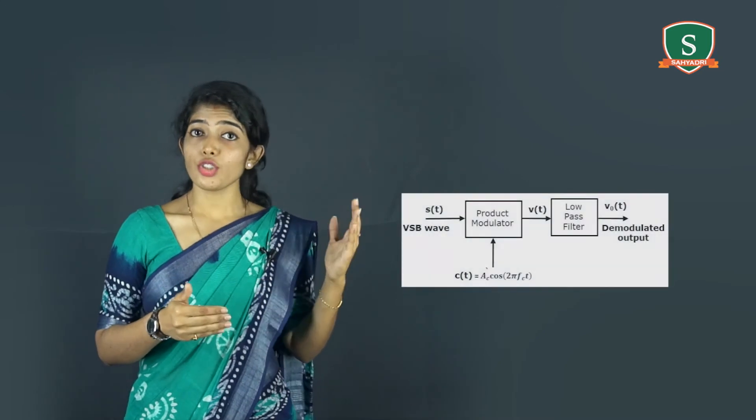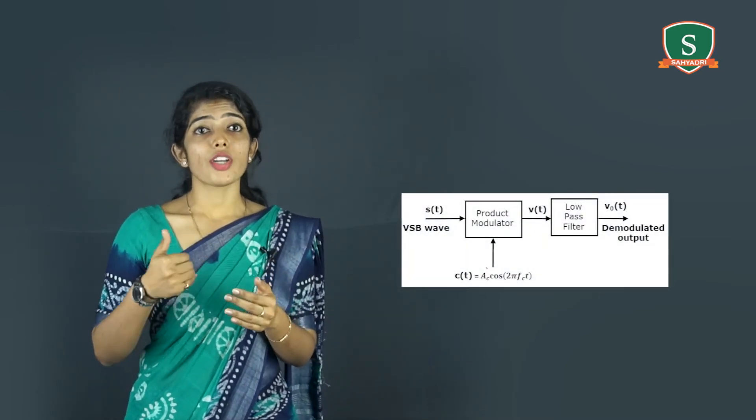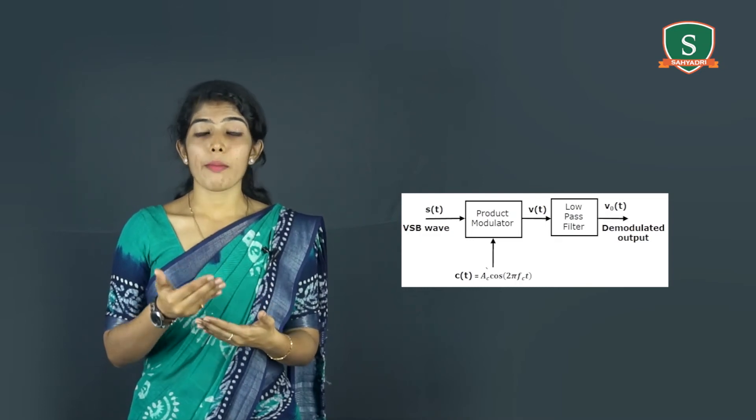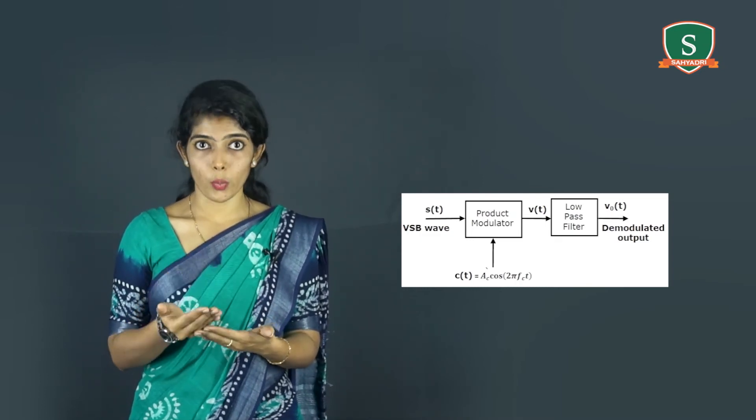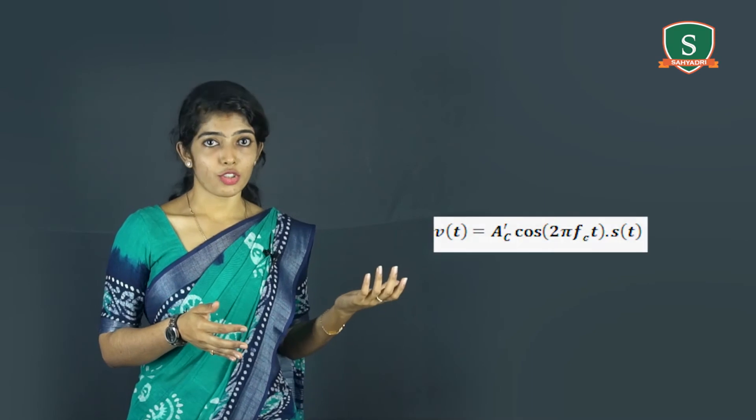The demodulation of VSB modulated waves can be achieved by passing VSB waves through a coherent detector and then determining the necessary condition of the detector output to provide an undistorted version of original signal M(t). The figure shows the VSB signal S(t) is multiplied by a locally generated carrier signal with unit amplitude AC' = 1, which is synchronous with the carrier wave AC cos(2π FCT).